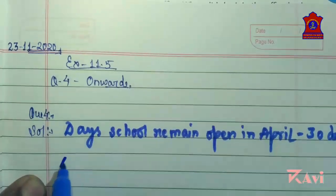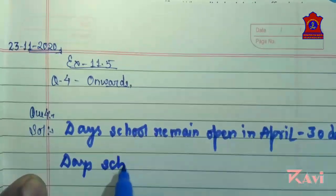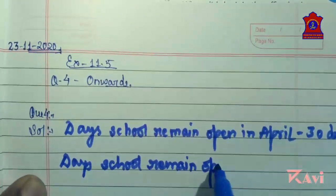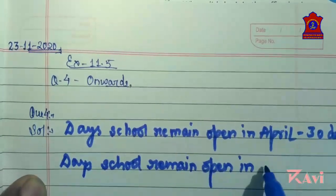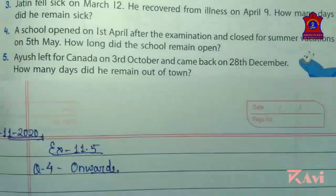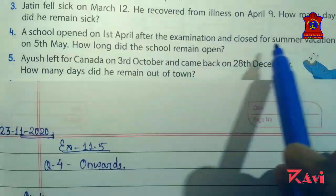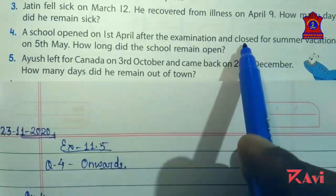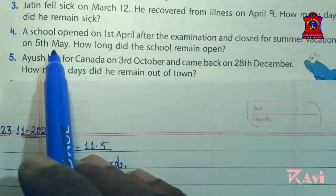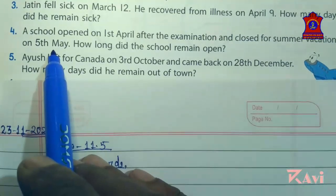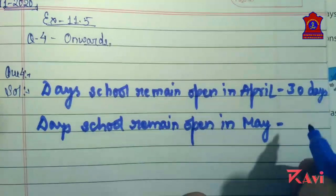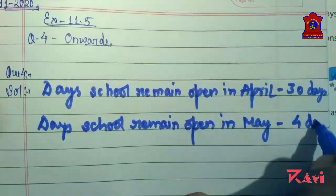Days school remain open in May. The school closed for summer vacation on 5th May, which means the school was closed on 5th, so the school was open up to 4th May. So how many days did the school remain open in May? From 1st to 4th — that is 4 days.